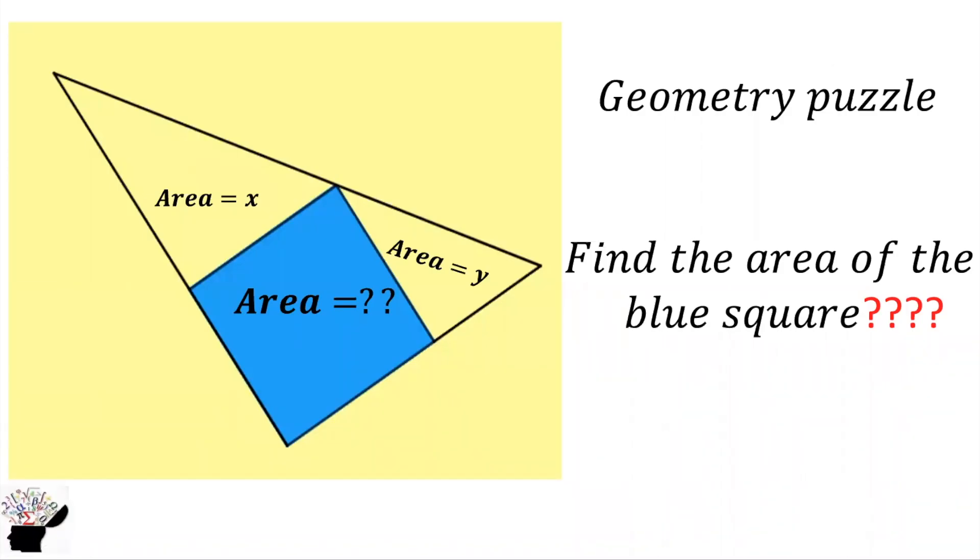Welcome you all to my YouTube channel. Let's consider this question. We have a right angle triangle, a square, and two smaller right angle triangles. We are supposed to find the area of the blue square. How can we solve this geometrical puzzle?